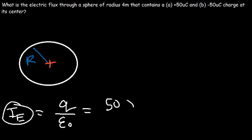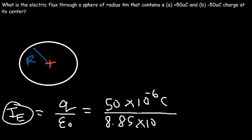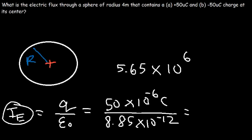So the flux is 50 times 10 to the minus 6 divided by 8.85 times 10 to the minus 12, giving 5.65 times 10 to the sixth newtons times square meters per coulomb. The answer is positive because placing a positive charge inside the sphere produces an outward flux.